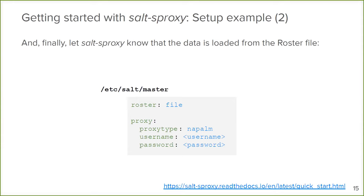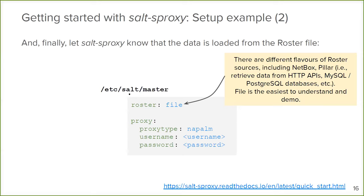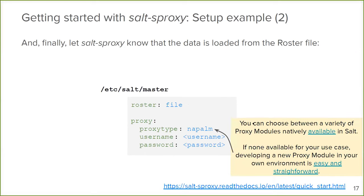The other details are the username and password for authentication, assuming you have the same username and password for all devices in your pool. If you don't, you put them into the roster specifically for each device. Basically, in the roster you put what is more specific for each device. You can get this list of devices from different sources - not only Napalm, there are many other things you can use. And with just these two files, you can start executing commands.